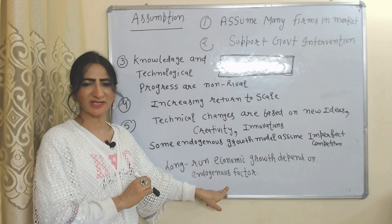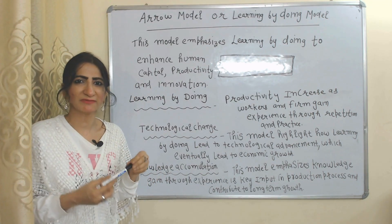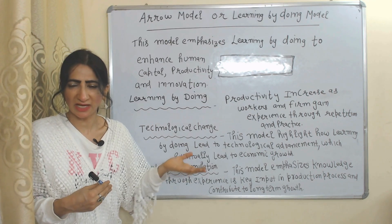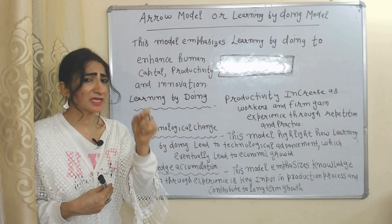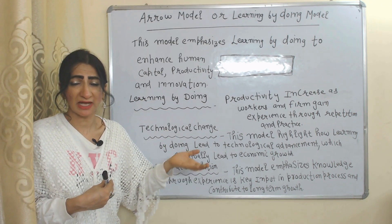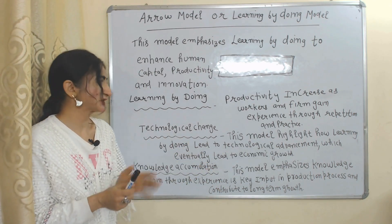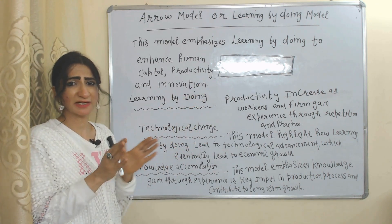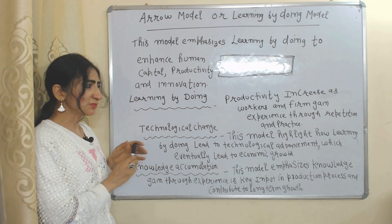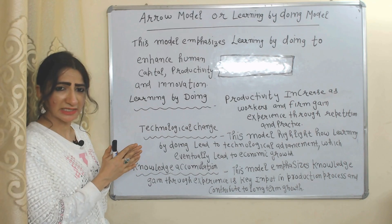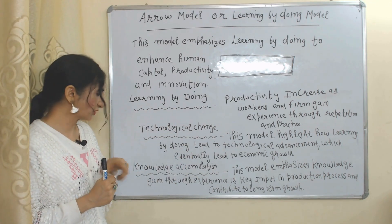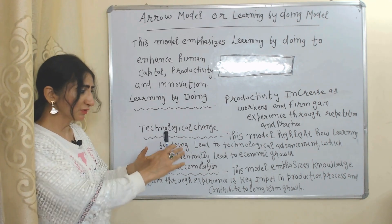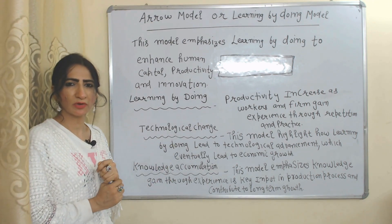First, we will talk about the Arrow model, also known as the learning-by-doing model. This model emphasizes learning by doing to enhance human capital productivity and innovation. Learning by doing means productivity increases as workers and firms gain experience through repetition and practice. The model highlights how learning by doing leads to technological advancement and economic growth, and emphasizes that knowledge accumulation through experience is a key input in the production process, contributing to long-run economic growth.